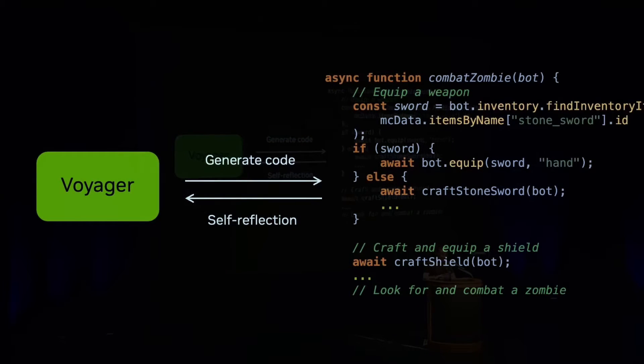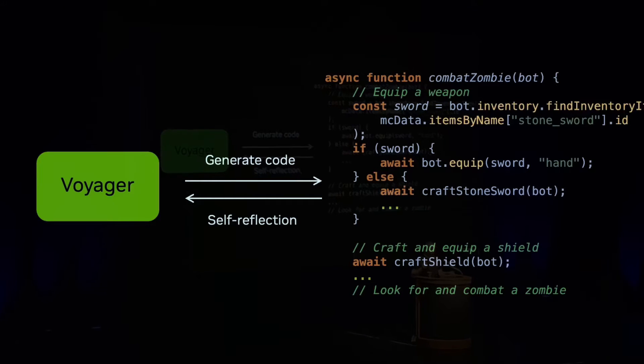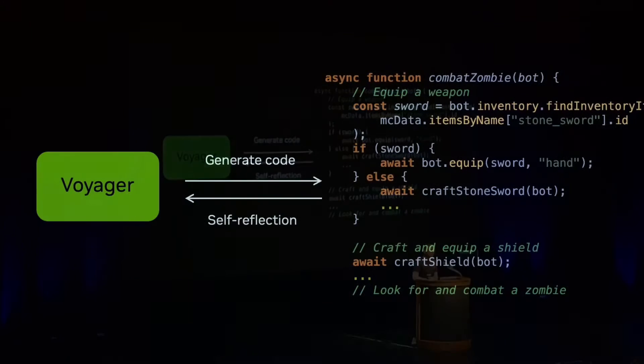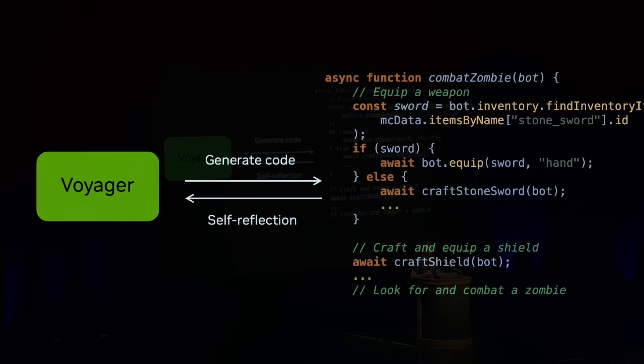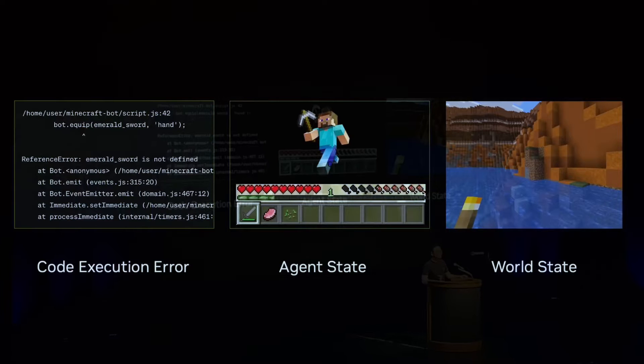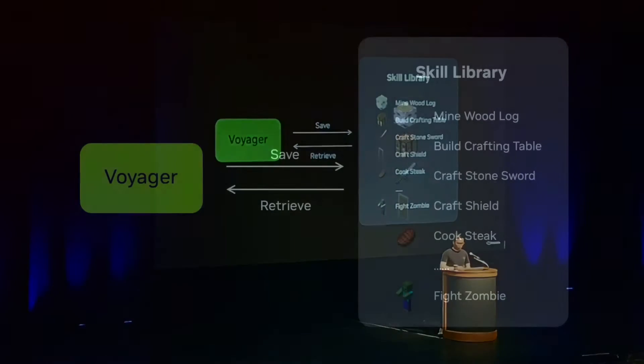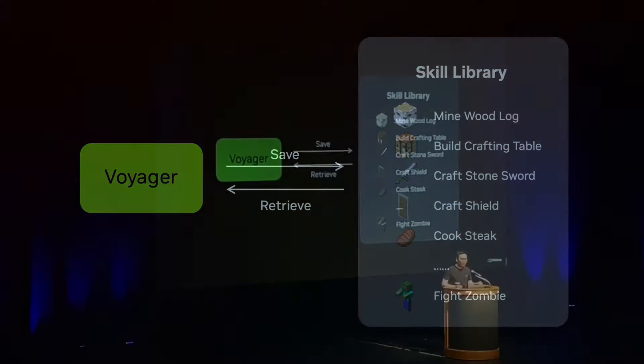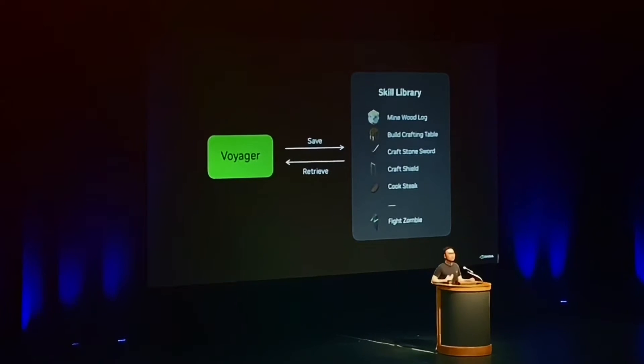How are we able to do this? We convert the 3D world into a text representation. Voyager invokes GPT-4 to generate a code snippet. Each code snippet is a skill. Voyager isn't always able to get this right on the first try, so we have this self-reflection mechanism. There are three sources: the JavaScript execution error, the agent state, and the world state. Once a skill becomes mature, Voyager will store the program into a skill library. You can think of the skill library as a code base, authored entirely by GPT-4, through trial and error. In the future, when Voyager faces a similar situation, it just retrieves the skill from the code library and executes it. In this way, Voyager bootstraps its own capability recursively.